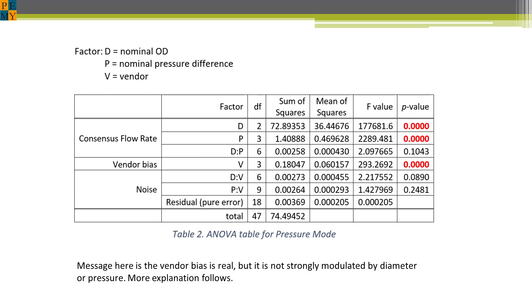In this analysis we used three factors, diameter D, pressure differential P, and vendor V as the main factors that affect the measurement of flow.